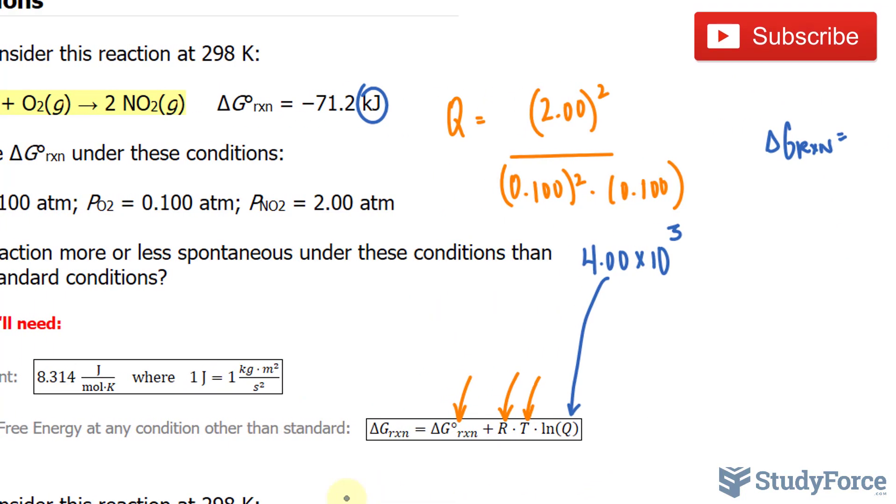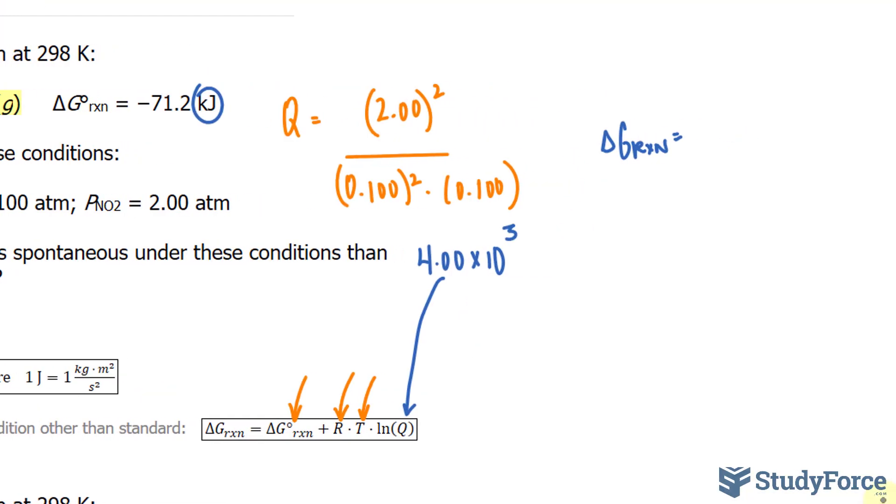But the gas constant is in joules. So let's convert that into joules just to make life easier for us. To convert from kilojoules to joules, you just multiply by 1,000. So we have negative 71,200 joules plus.